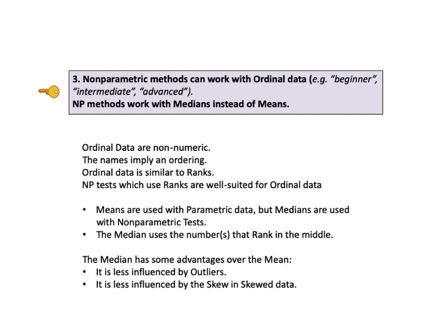Means are normally used as a measure of central tendency in parametric tests. In converting the data to signs, ranks, etc., we lose the ability to calculate the mean, so we use the median instead. The median is another measure of central tendency, well suited for NP tests because it uses the numbers that rank in the middle. To determine the median, arrange the data values in order, low to high or high to low. For an odd number of data values, the median will be the middle value; for an even number, it will be the average of the two middle values. The median has some advantages over the mean: it is less influenced by outliers and by skew in skewed data.